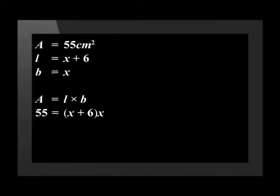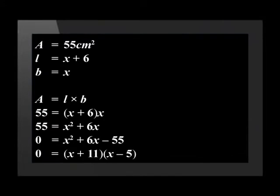Now that we have translated the problem into a mathematical equation, we can solve for x. So we get 55 equals x squared plus 6x. We can tell it's a quadratic equation by the x squared. This means that we should move the 55 to the right, so that we have 0 equals x squared plus 6x minus 55. Now to factorize and solve the quadratic trinomial, we get x plus 11 times x minus 5 equals 0.